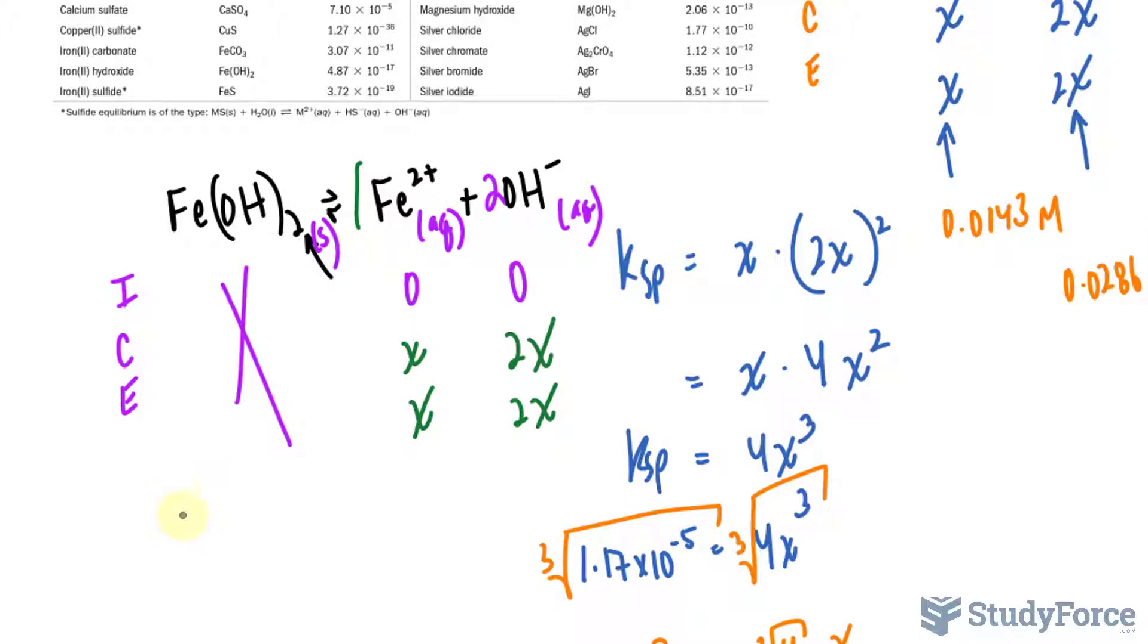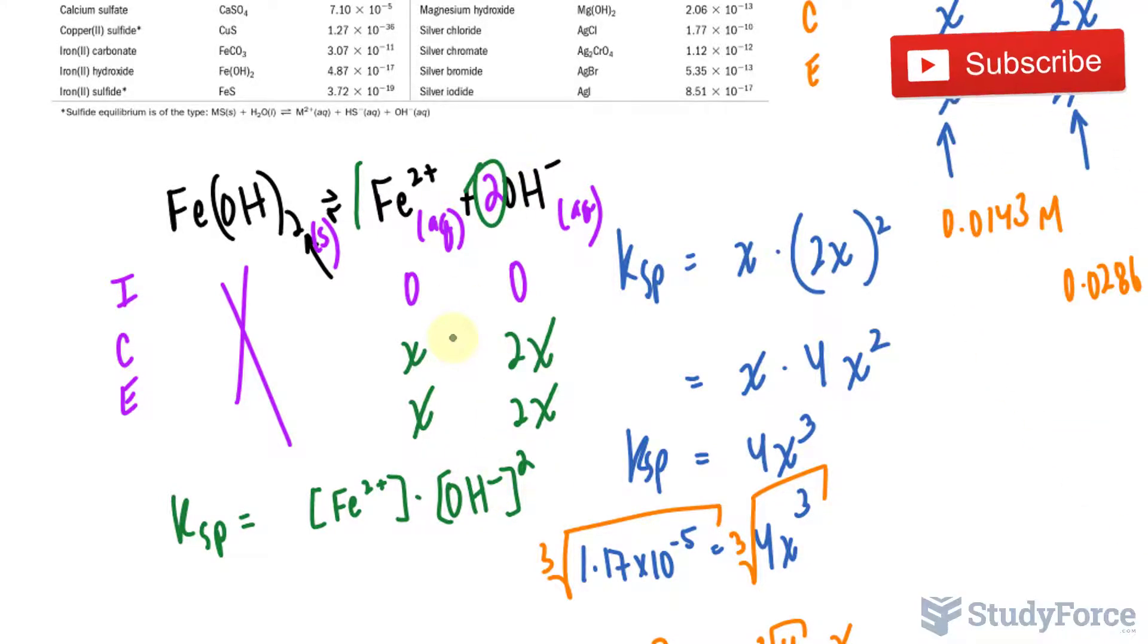The equilibrium expression, I'll write down Ksp, is equal to the concentration of the products over the concentration of the reactants. But our reactants is a solid, so we'll ignore it. We have Fe2+, its concentration, times the concentration of hydroxide. And I'll raise this to the power of 2, because we have a coefficient of 2. This will be raised to the power of 1, although you don't need to show it.